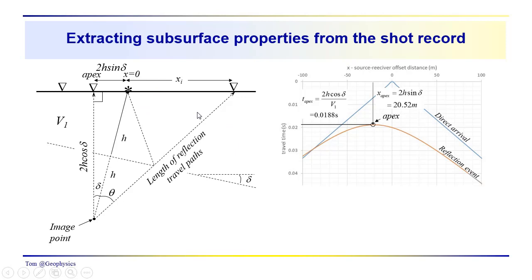We can also get V1 from the direct arrival and solve for the reflection travel times in general. We know that x-apex equals minus 2H sine delta, and T-apex is as shown. If we can measure the apex distance, we know that equals 2H sine delta. If we can measure the apex arrival time, we know that equals 2H cosine delta over V1. So we have information that we can extract from our observations.